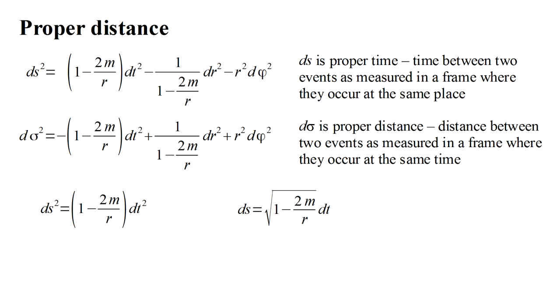when we stay in one place, is ds equals the Schwarzschild factor times dt. And as we've discussed, this expresses gravitational time dilation.